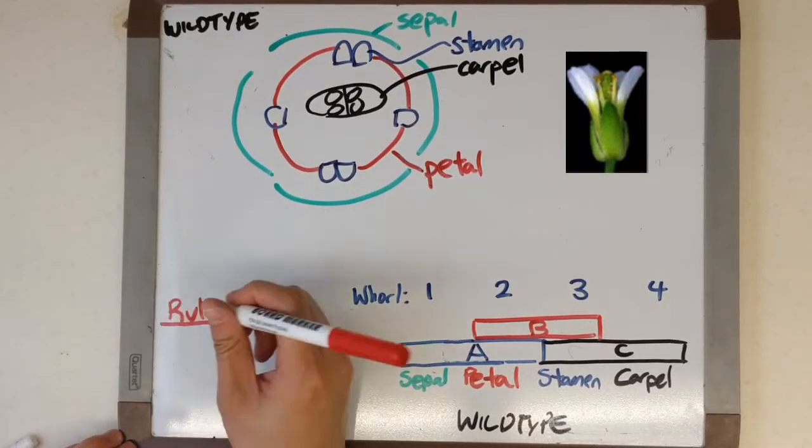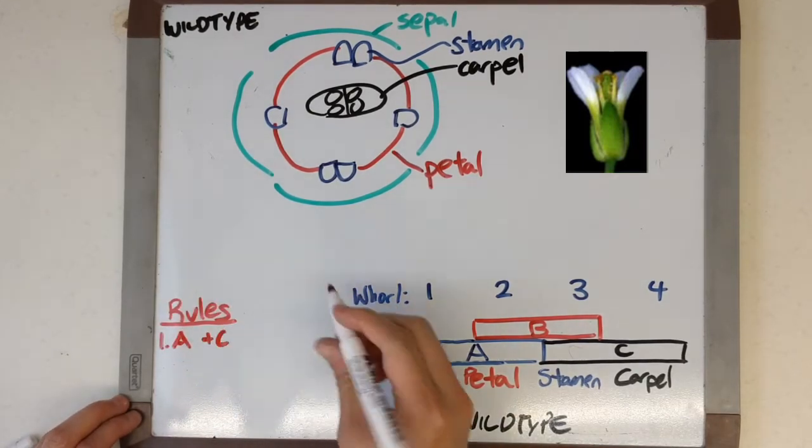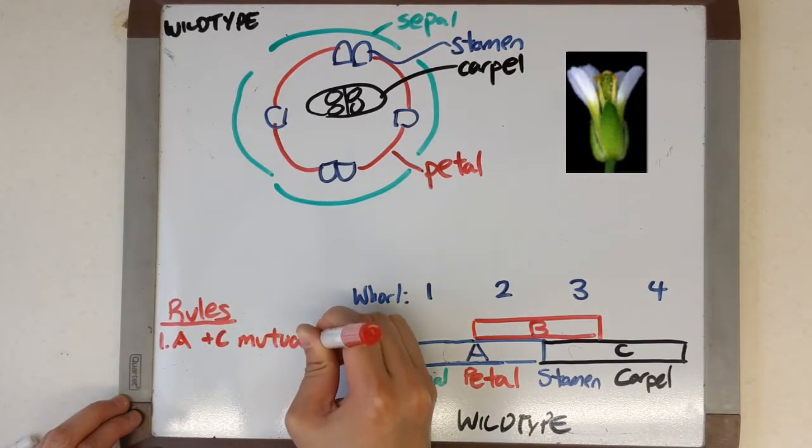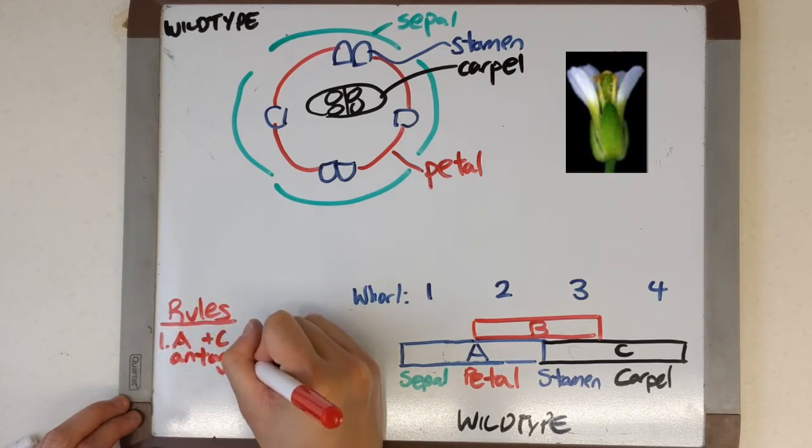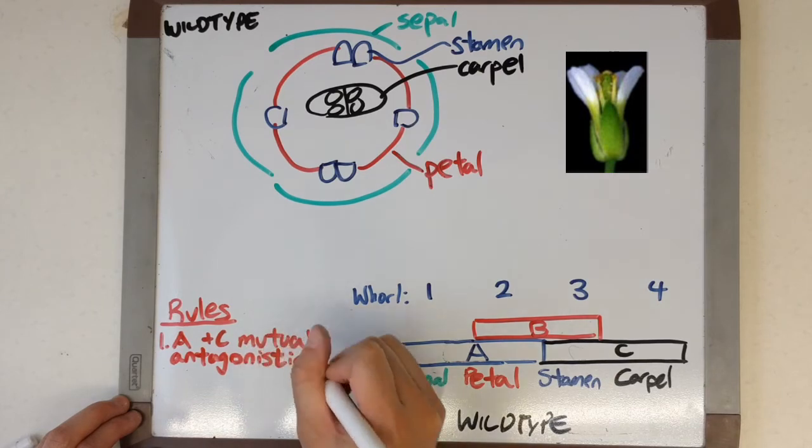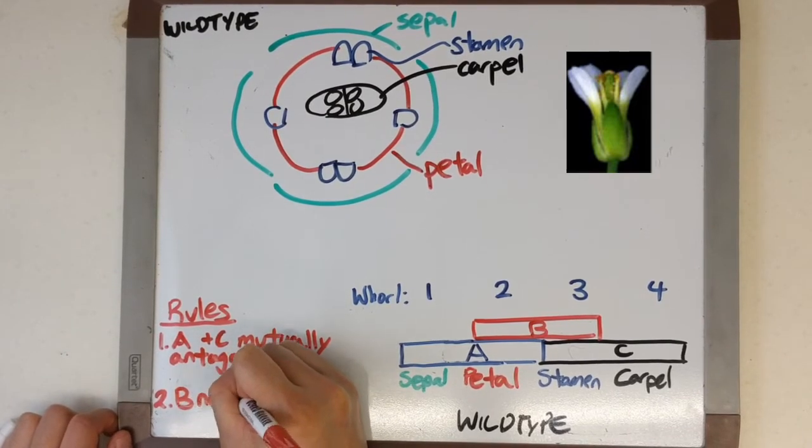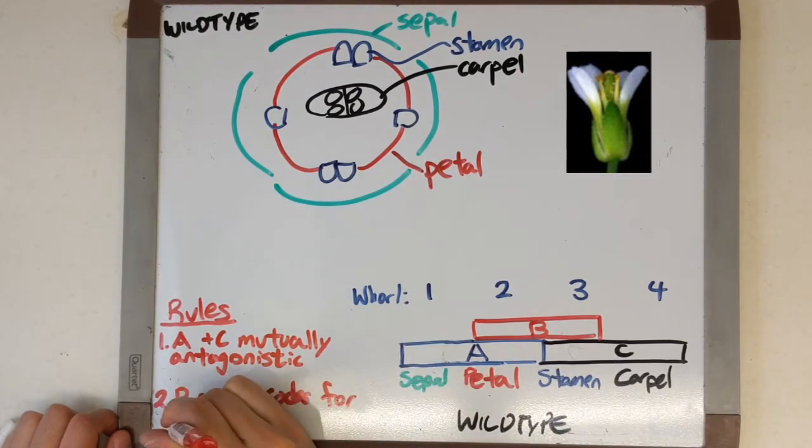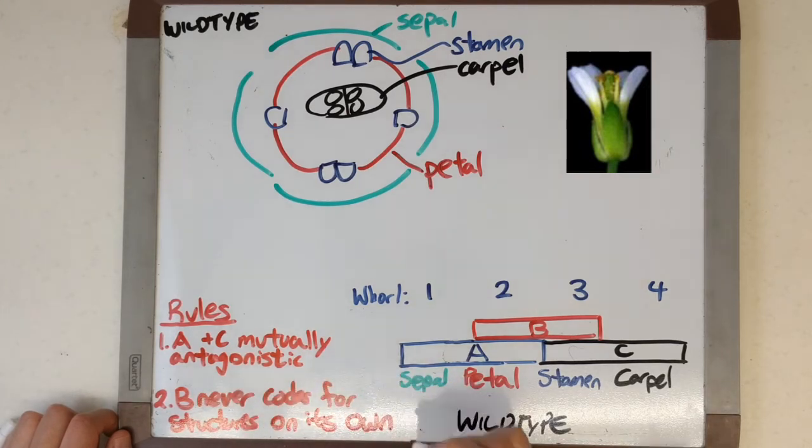So there's a couple rules associated with the expression of these three gene classes. First, genes from class A are mutually antagonistic with genes from class C. This means that class A genes will repress the expression of class C genes and vice versa, which results in this clear boundary between the two. The next rule is that while class A and C genes on their own code for structures, class B genes on their own do not. This means that if B was ever expressed without one of the other two, it would not result in any structures.